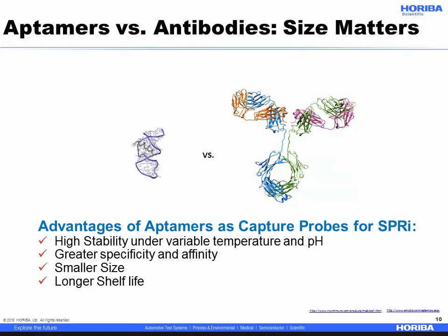So we decided to use aptamers as opposed to antibodies to serve as our capture ligand for several reasons. First, they're very flexible in the sense that you can develop them to bind to any target. In addition, they are more specific than antibodies, and they are smaller in size, which decreases the separation distance between my detection molecule and the sensor surface. Also, they have a longer shelf life, which is another attractive feature. We have developed X-aptamers for progesterone using a commercial kit purchased from Ambiotech.